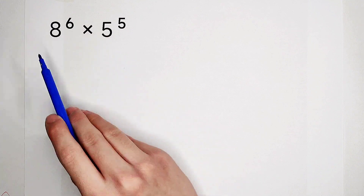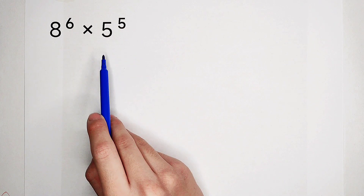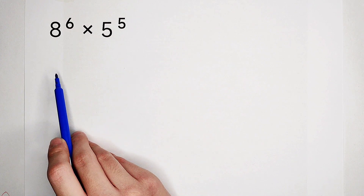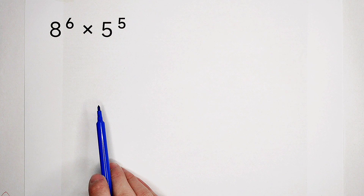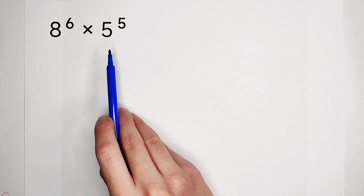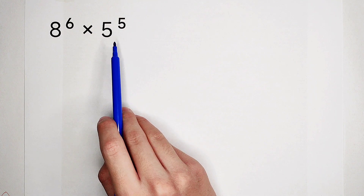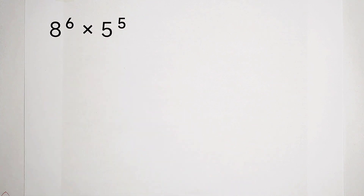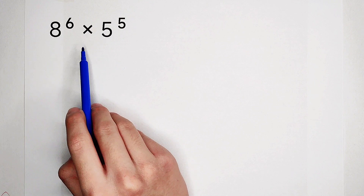The bases are 8 and 5. Are there any relationships between them? Of course there are. 5 times 8 is 40 — it's a very nice number, because the last digit is 0. For the exponents 6 and 5, notice that 6 is 5 plus 1. So this gives us an opportunity to rewrite the 6 as 5 plus 1.